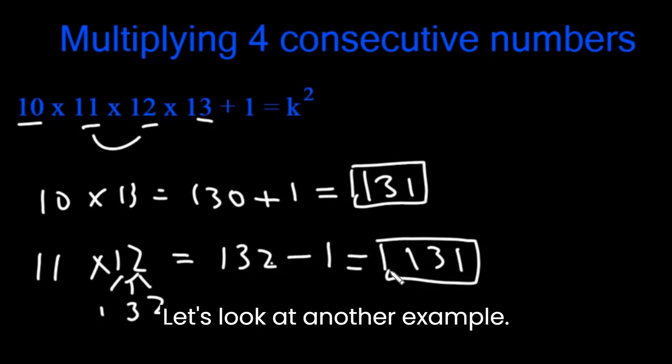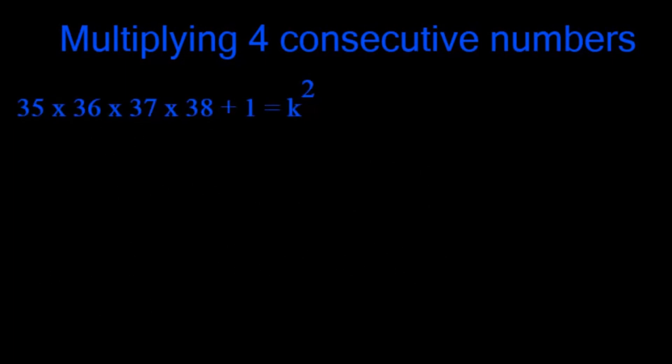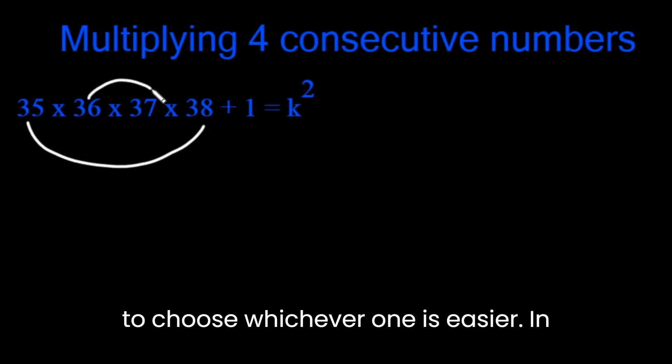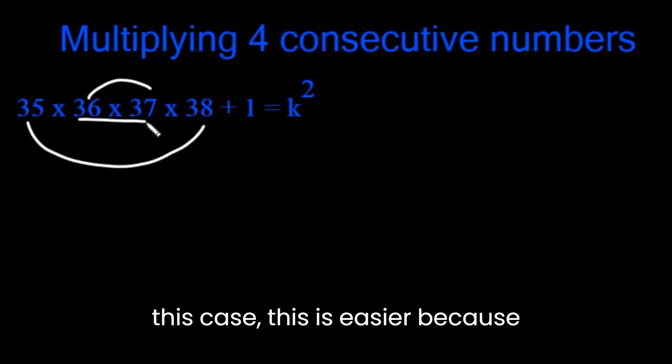Let's look at another example. We can multiply the first and the last or we can multiply the middle two. We need to choose whichever one is easier. In this case, this is easier because we have a trick for 37.